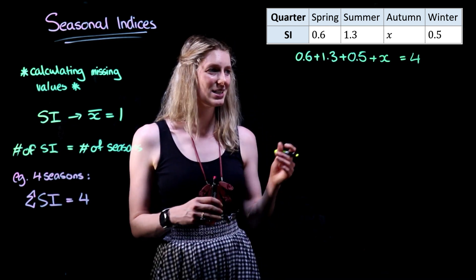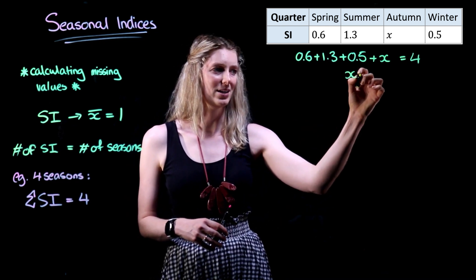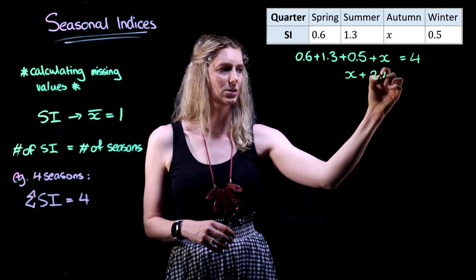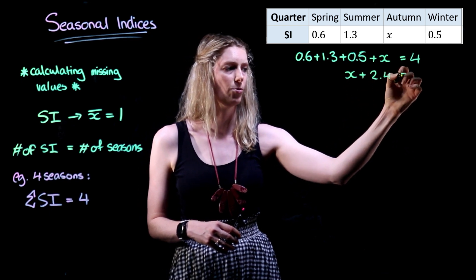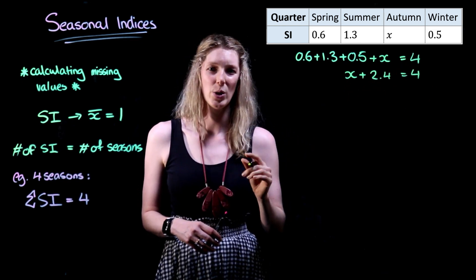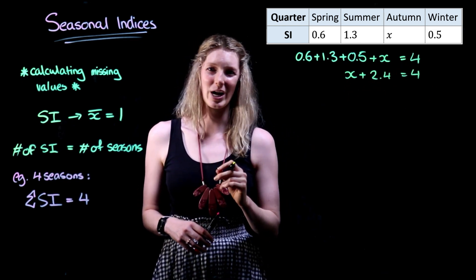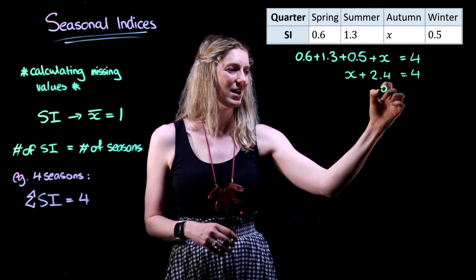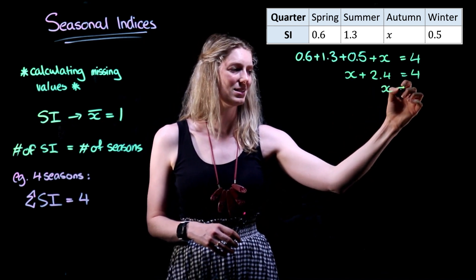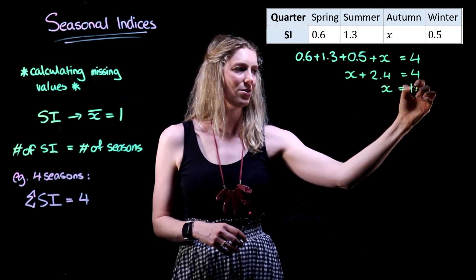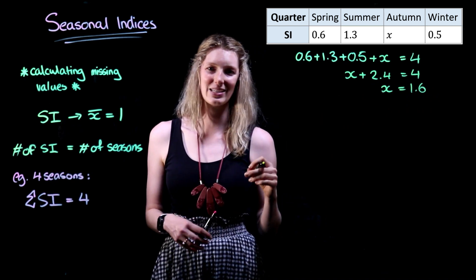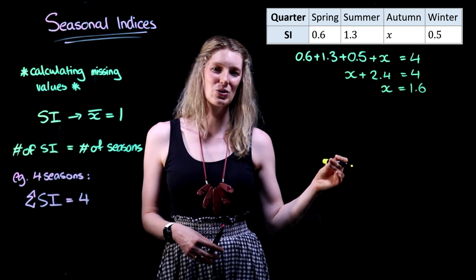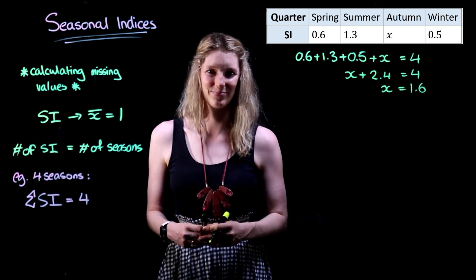Let's make this equation look a little bit nicer. We have x plus 2.4 equals 4. We're going to subtract 2.4 from each side, and that means our unknown autumn seasonal index, x, is going to equal 1.6.